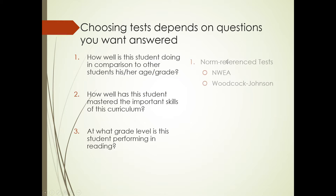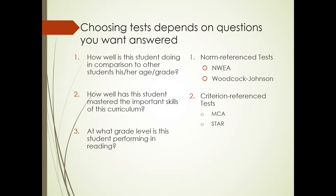That will determine whether you use norm reference tests that are going to tell you how this student does in comparison to other students his or her age or grade. Whether you use criterion reference tests such as MCA or STAR to see if they've mastered important skills. Or for what reading grade level are they at, you want informal reading inventories, particularly the QRI 5, which is the one that we use.